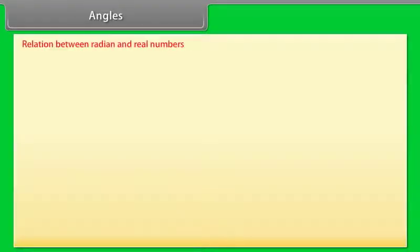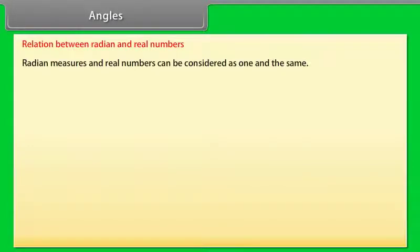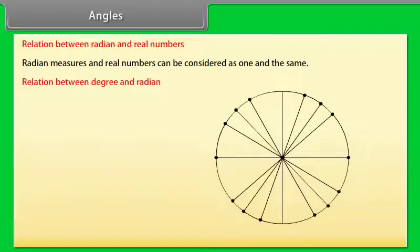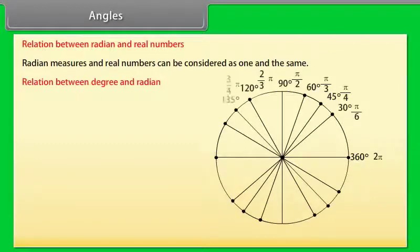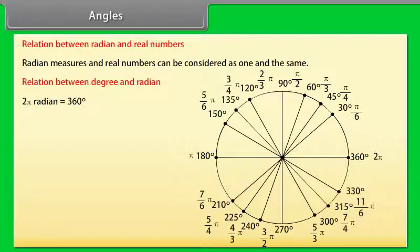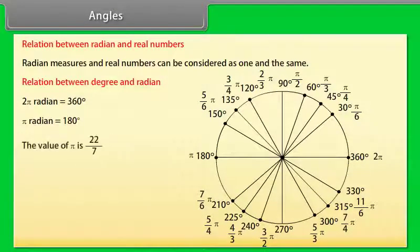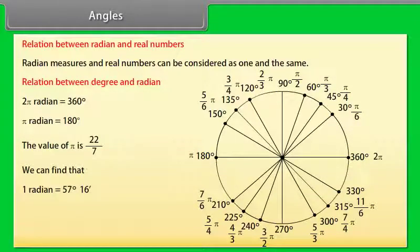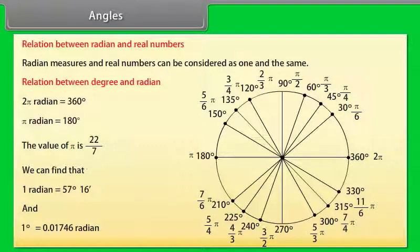Radian measures and real numbers can be considered as one and the same. Relation between degree and radian: 2π radians equals 360 degrees; π radians equals 180 degrees. The value of π is 22/7. We find that 1 radian equals 57 degrees 16 minutes, and 1 degree equals 0.01746 radians.